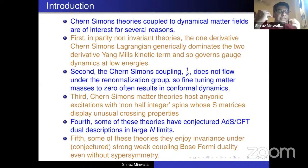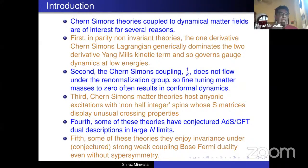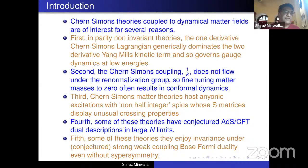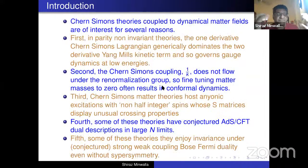Second, the Chern-Simons coupling is the inverse of an integer. Since an integer cannot change continuously, the inverse of an integer cannot change continuously. Therefore, the Chern-Simons term cannot flow under the renormalization group. This tells you that Chern-Simons coupled gauge theories are very easily made conformal and give rise very simply, without any need for supersymmetry for instance, to large classes of conformal field theories. This also makes these theories interesting from the point of view of a study of critical phenomena and renormalization.